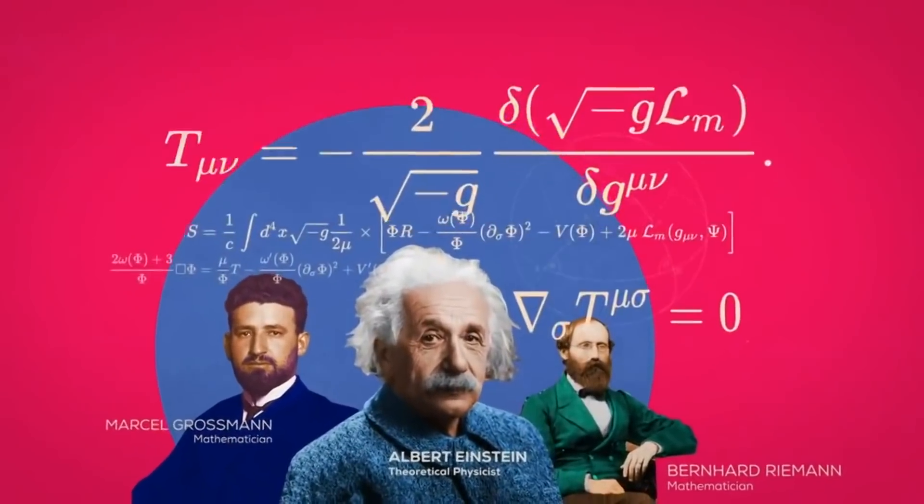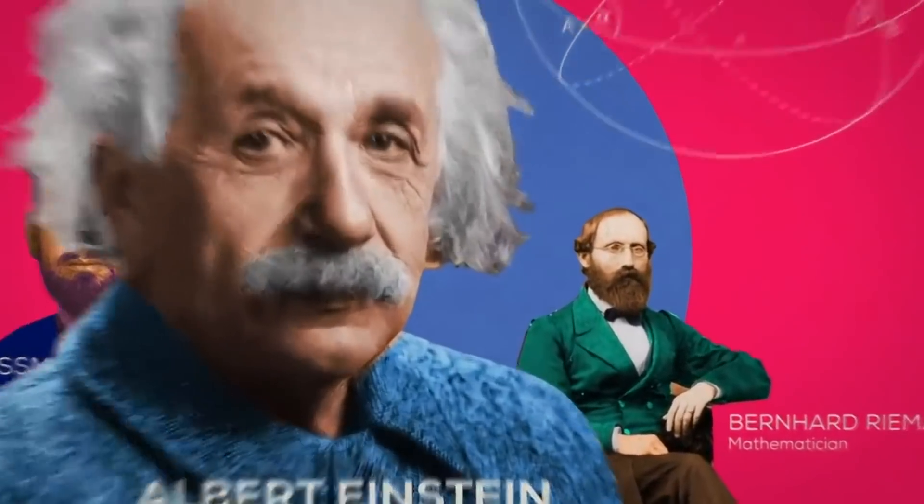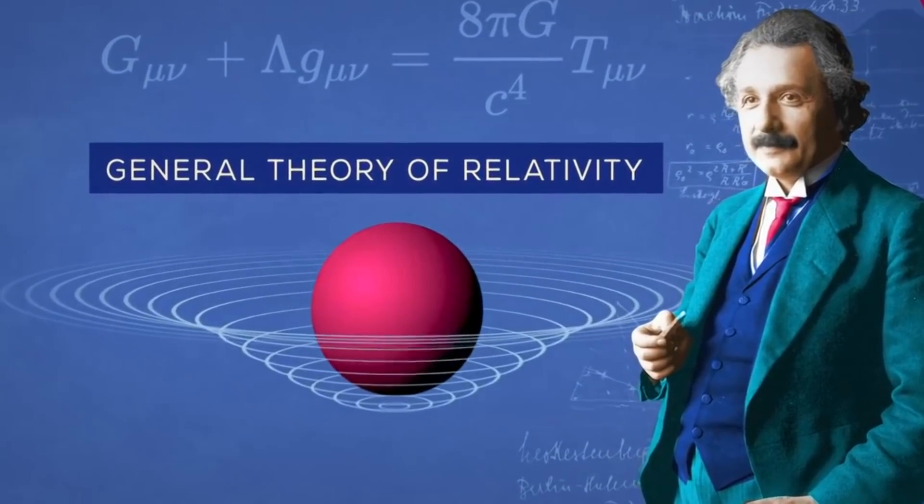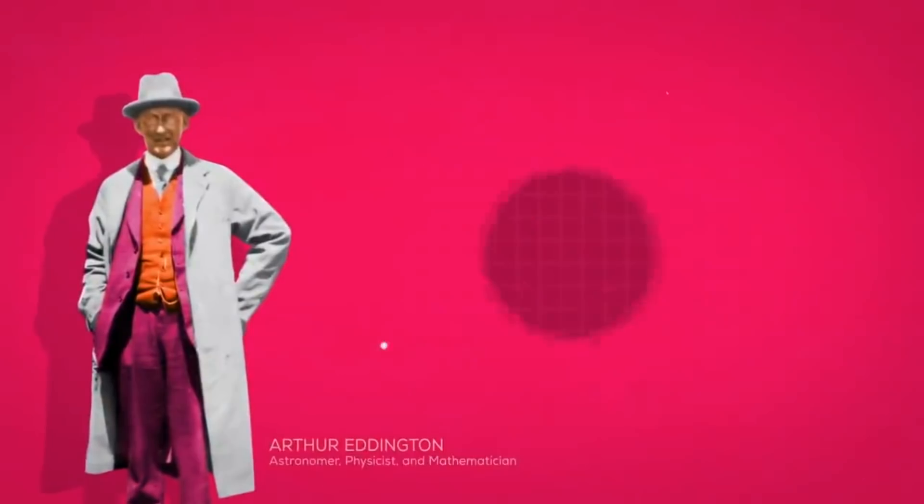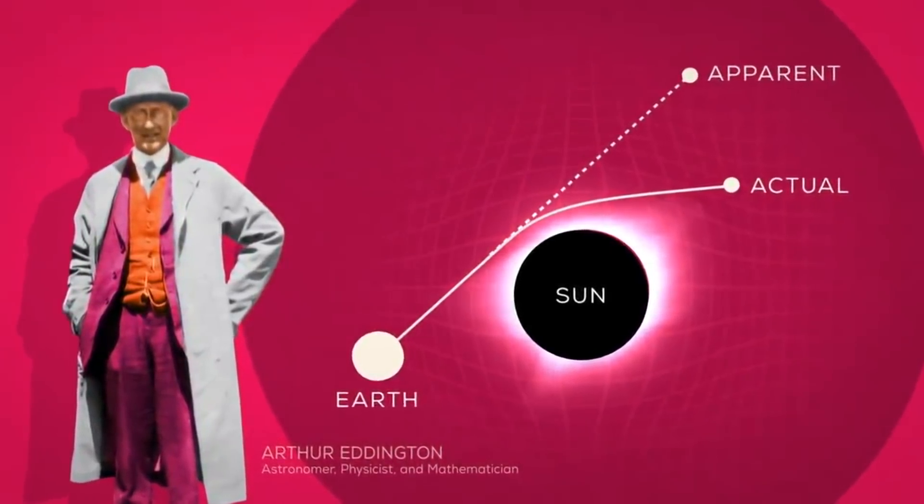Albert Einstein, working with theoretical mathematics developed 50 years earlier, formulated his general theory of relativity, a pillar of modern physics. His calculations were later confirmed during a solar eclipse, when Arthur Eddington observed light from distant stars bending around the sun.